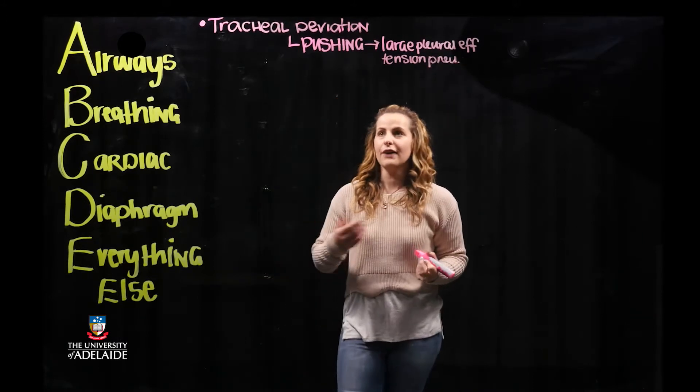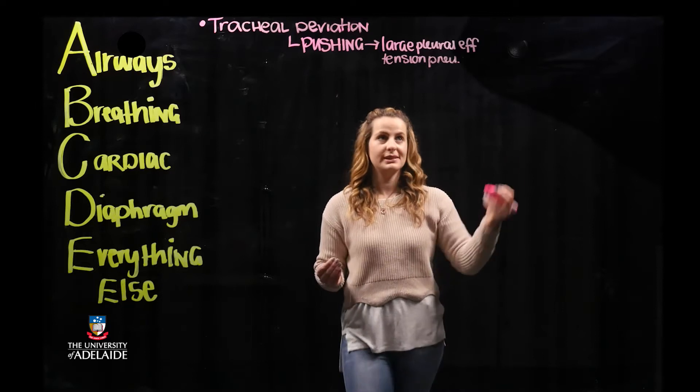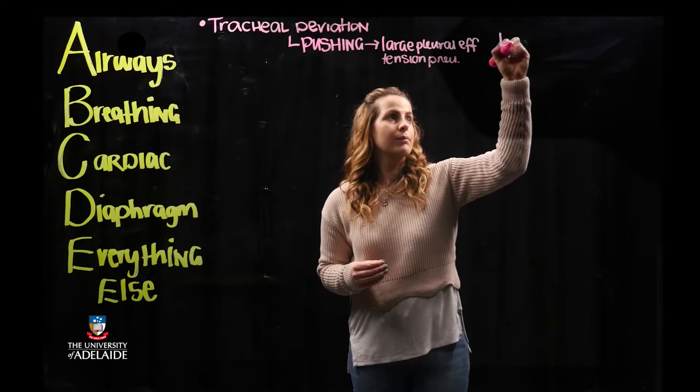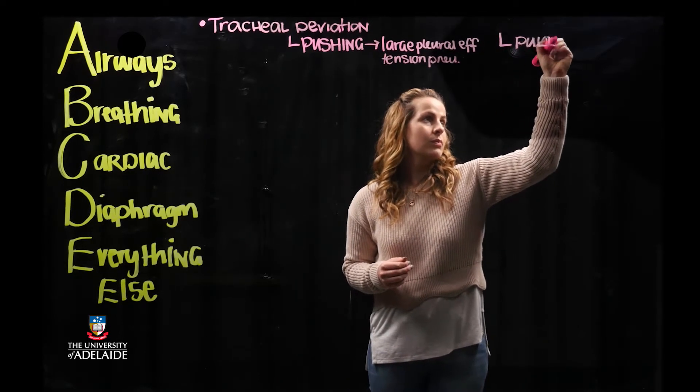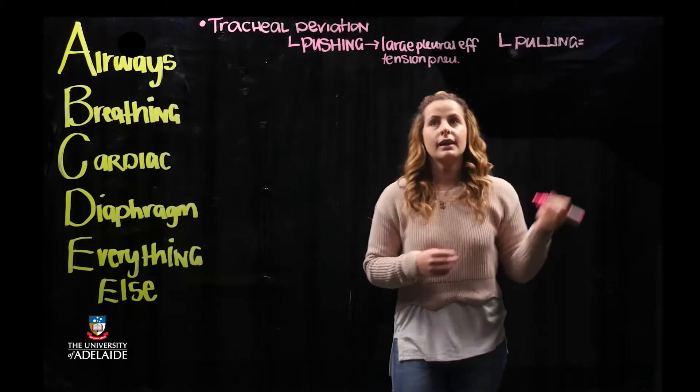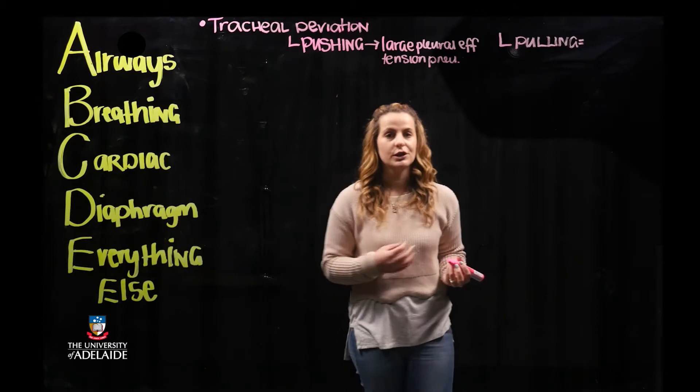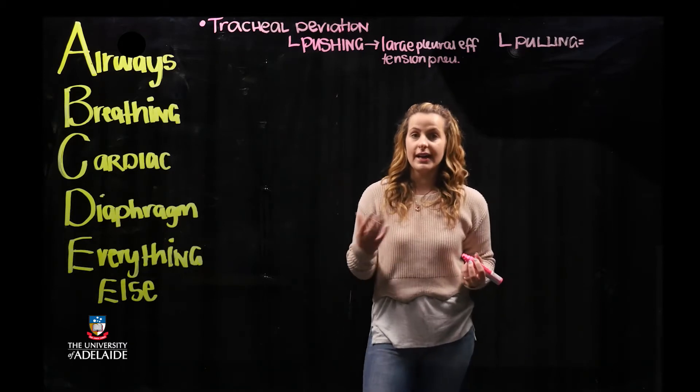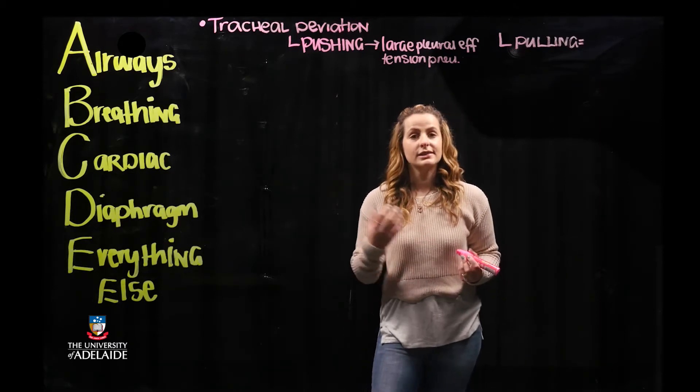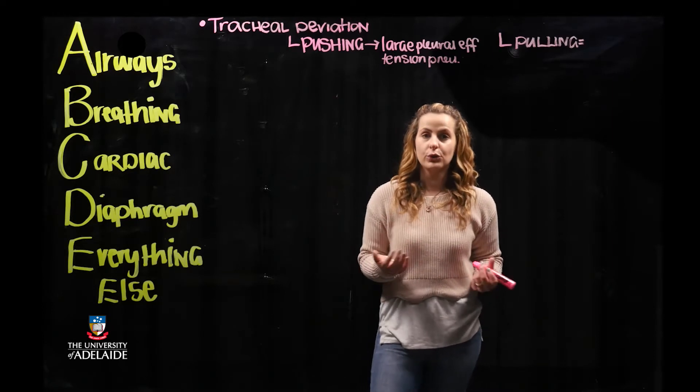Conversely, if you see pulling of the trachea to a particular side, this is going to be suggestive of consolidation, which is an area of higher density, as well as suggestive of partial or full lung collapse.